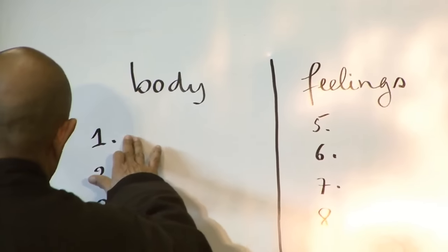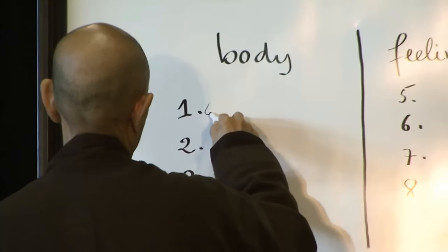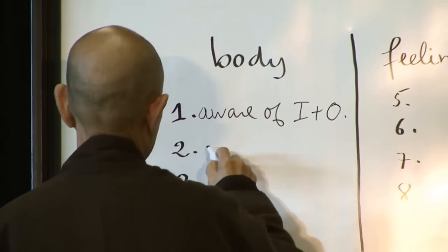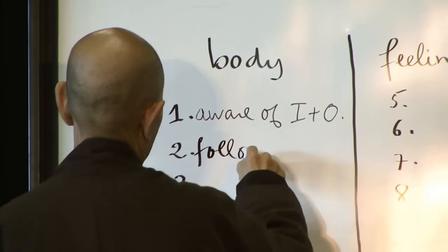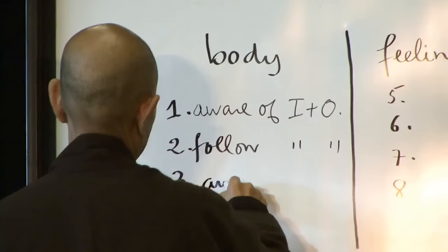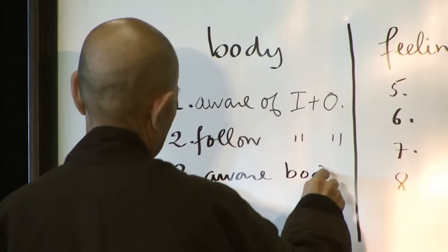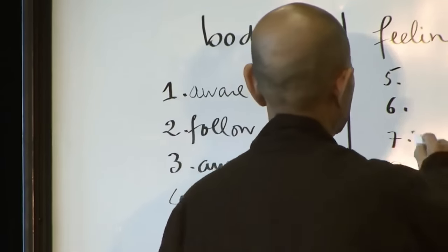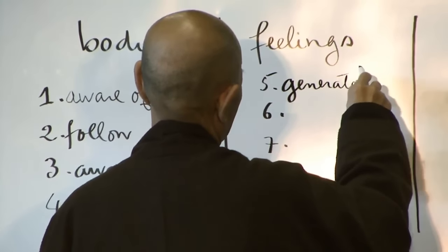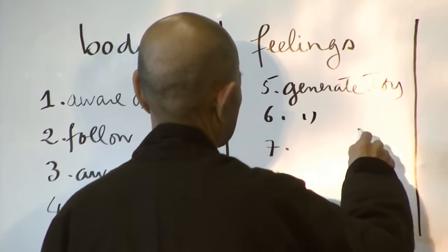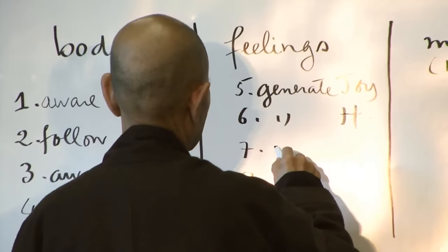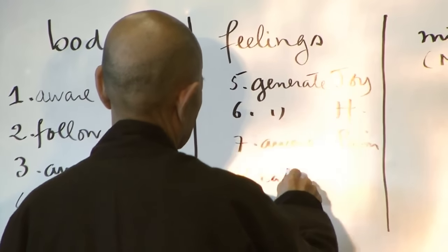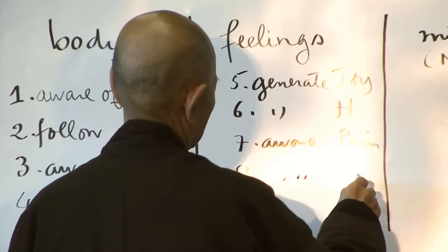This is to be aware of our in-breath and our out-breath. This is to follow our in-breath and our out-breath. This is to be aware of our body. This is to calm our body. This is to generate joy. This is to generate happiness. This is to be aware of the painful feelings or emotions. And this is to calm down the painful feelings and emotions.